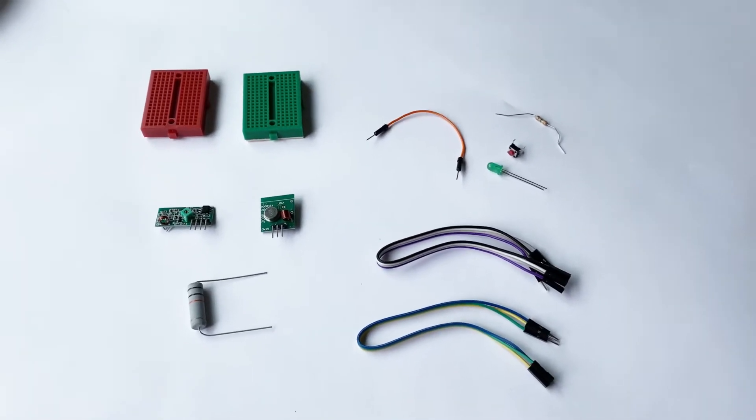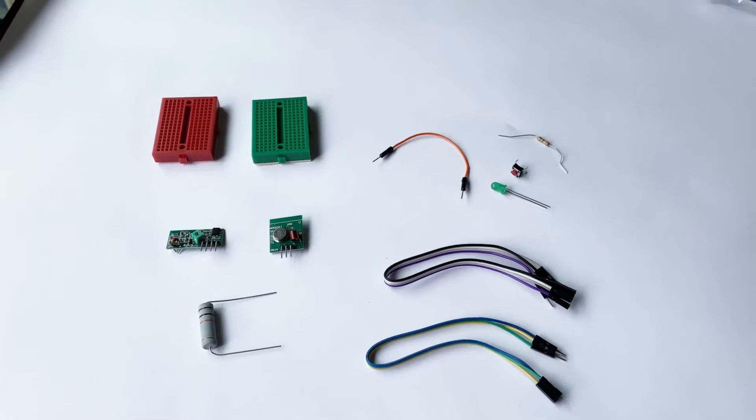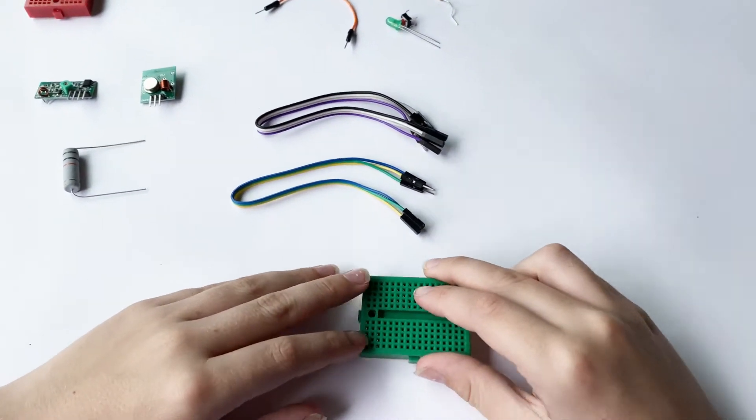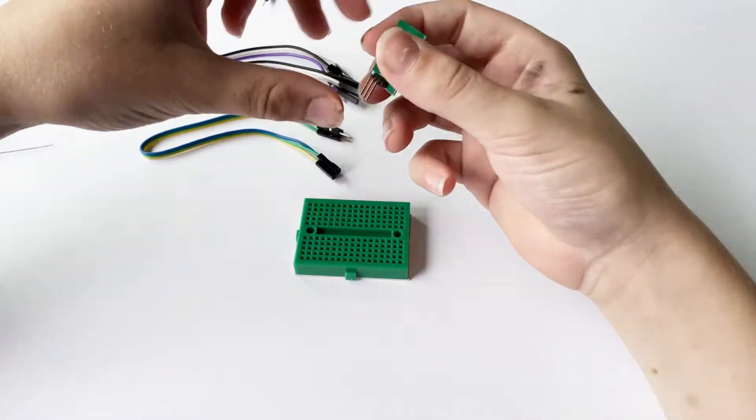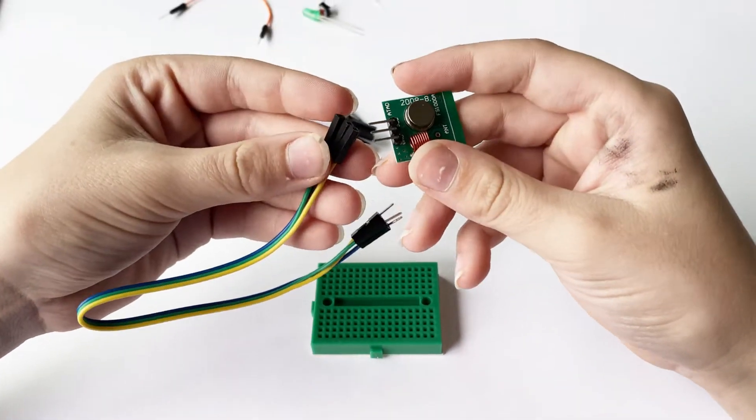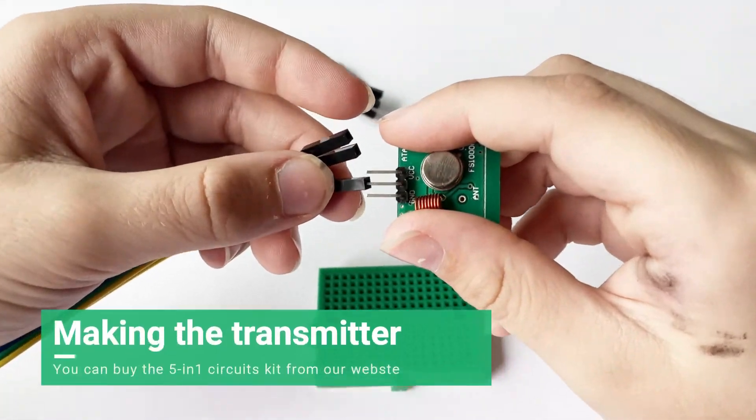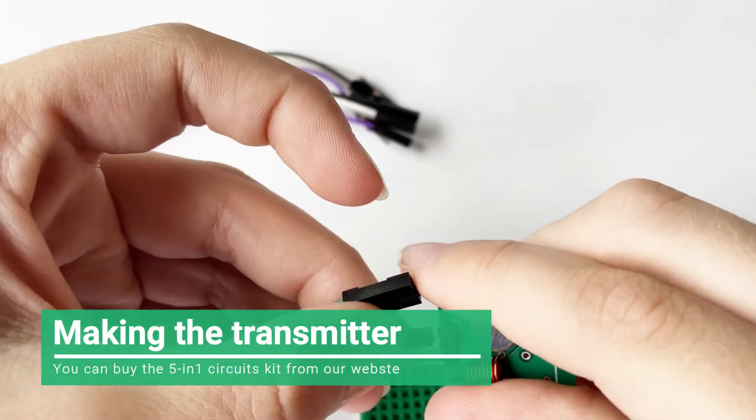So now we're going to make a wireless transmitter and receiver. If we get a red board and our wireless transmitter, we can just put a yellow wire into this pin here, a blue wire there.